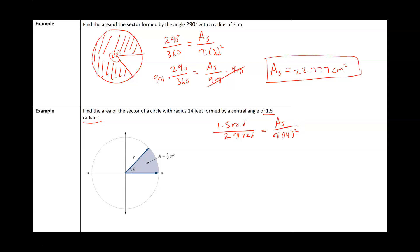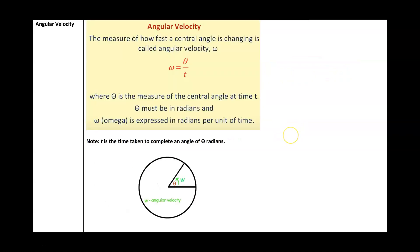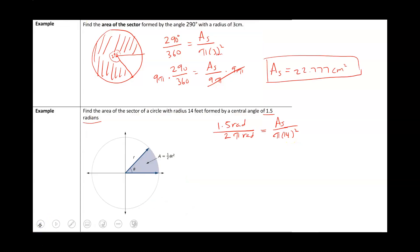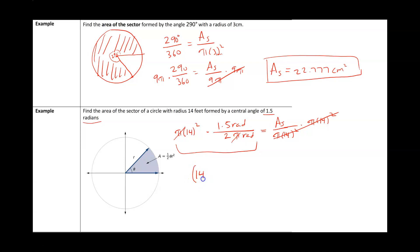To get the area of the sector by itself, multiply both sides by pi times 14 squared. In your calculator, type pi times 14 squared times 1.5 over 2 pi. You can cancel the pi's, leaving 14 squared times 1.5 over 2, which gives you 147 square feet.